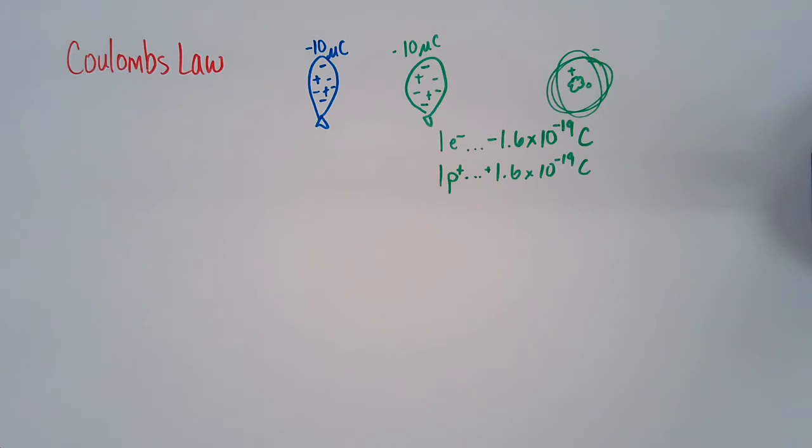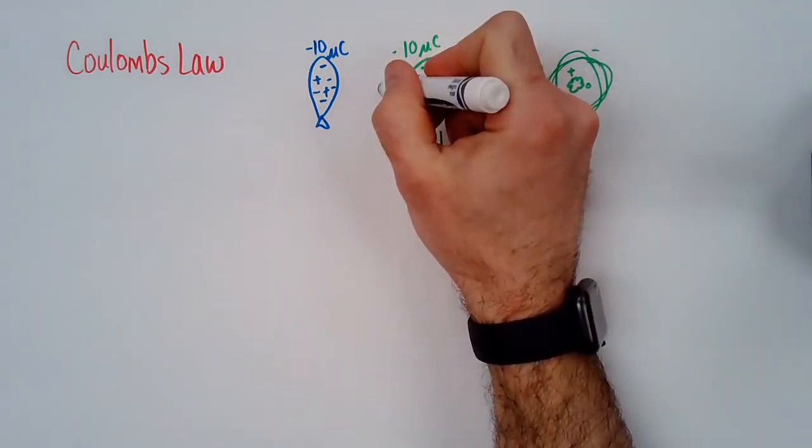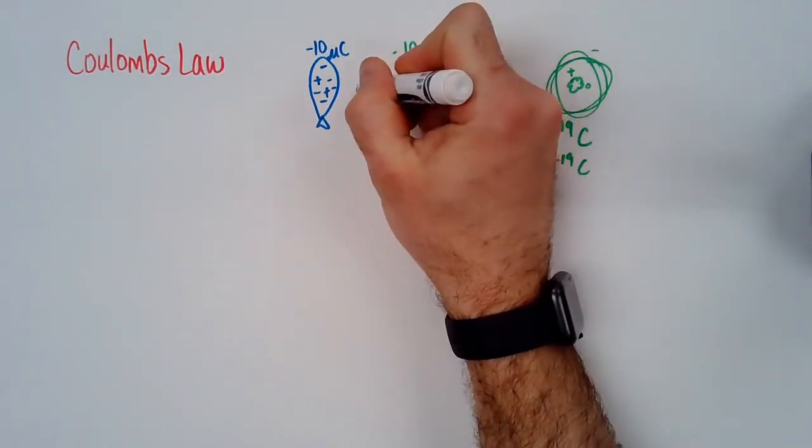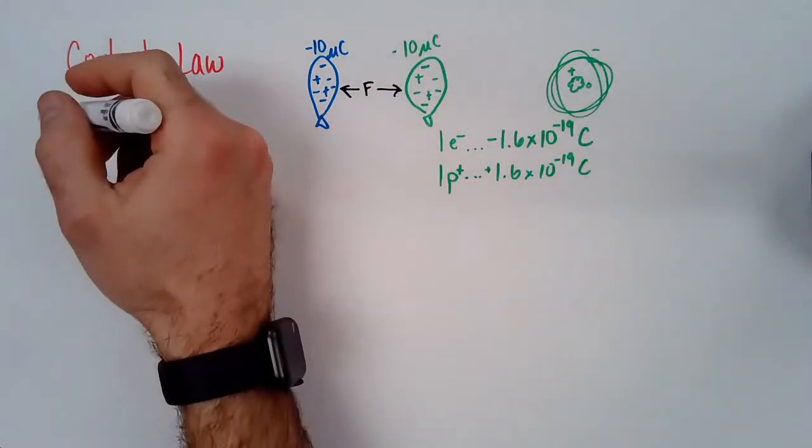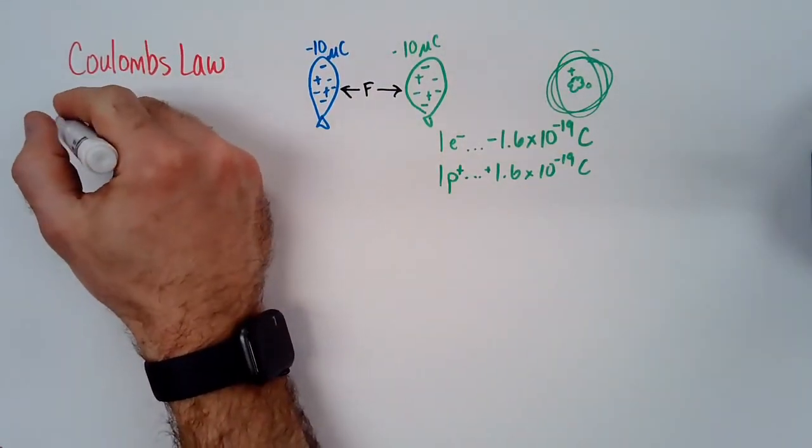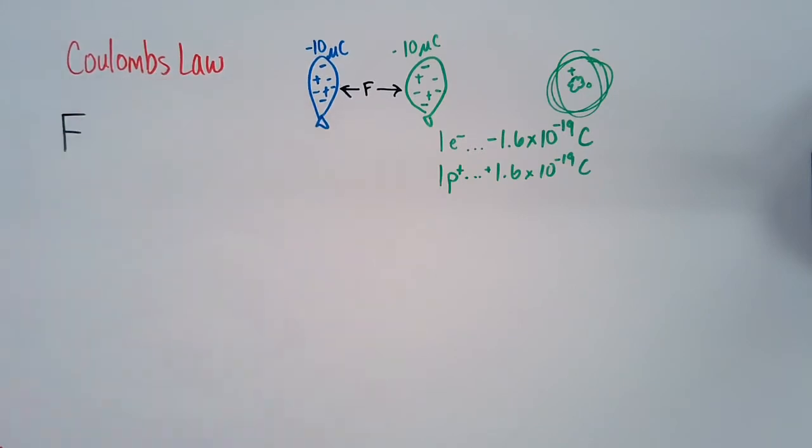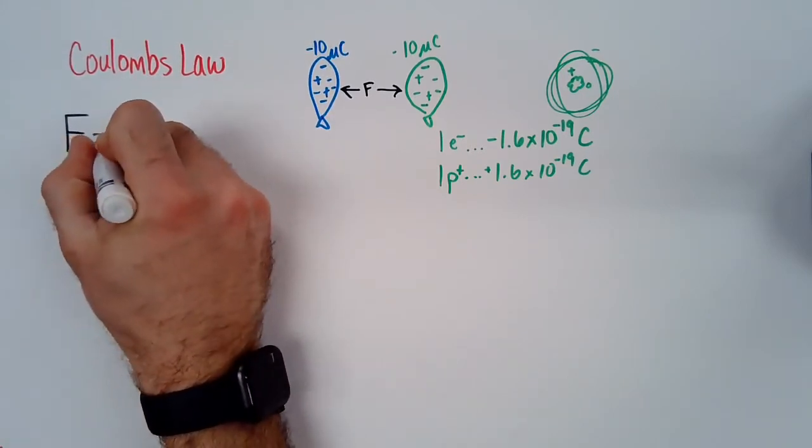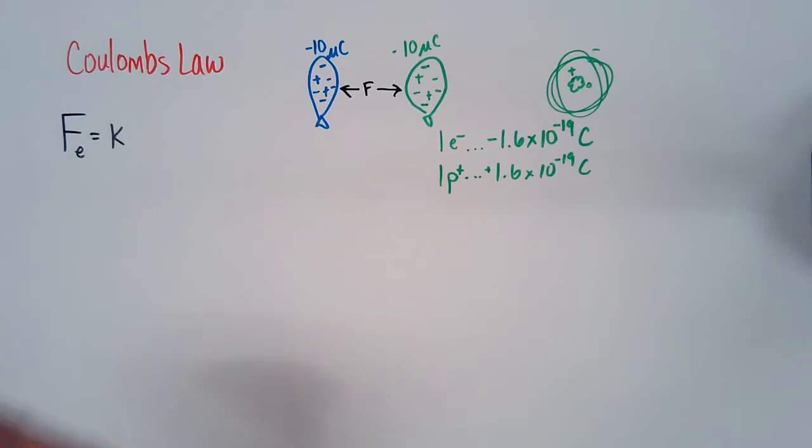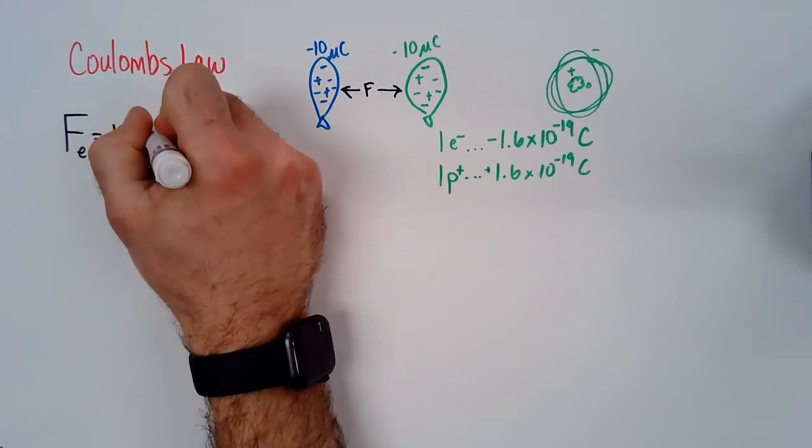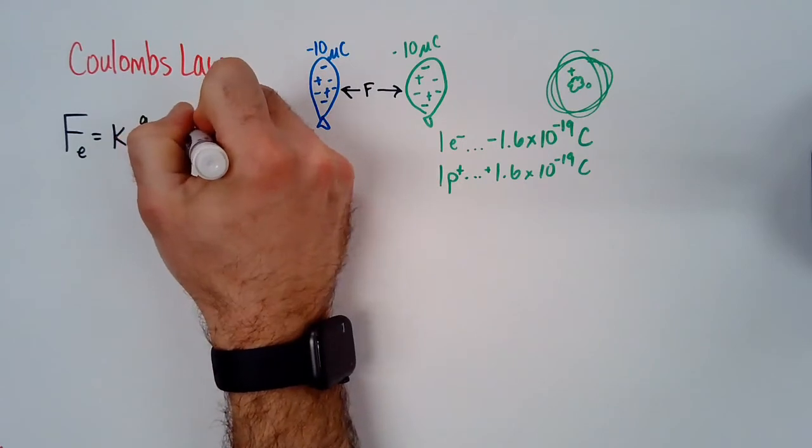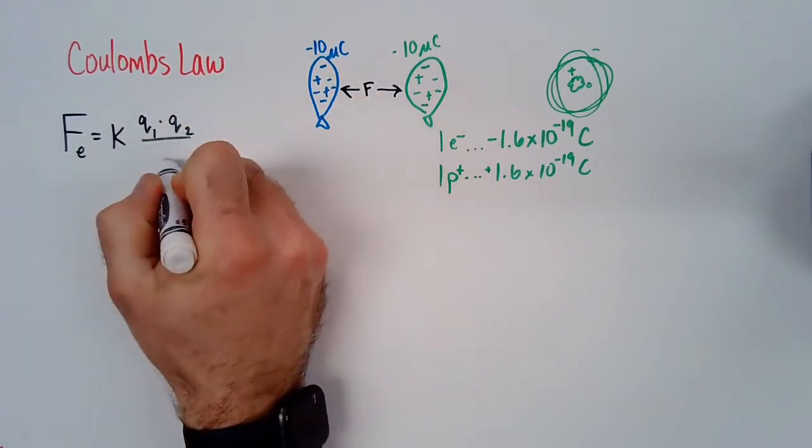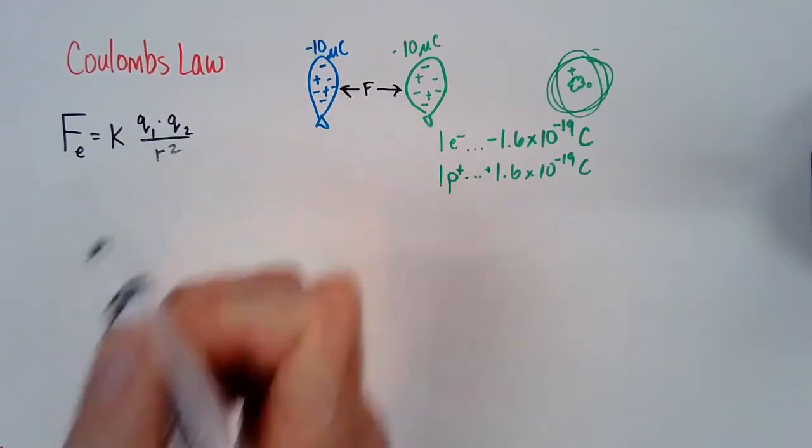Due to being charged, there's now going to be a repulsion force between these balloons. Coulomb's law describes how much that force will be. It says that that electric force will be equal to a constant that we call K times the amount of charge 1 times the amount of charge 2 divided by the distance between them squared.